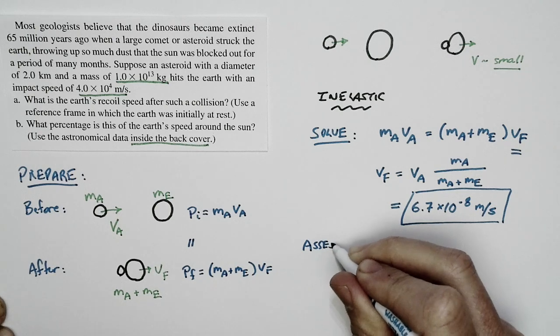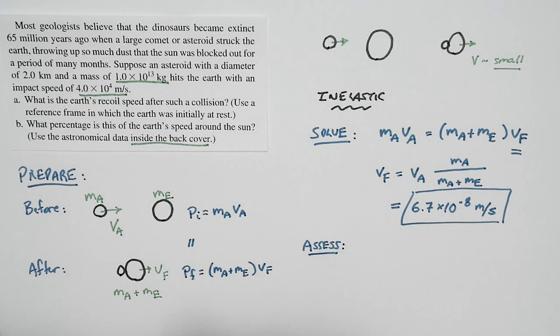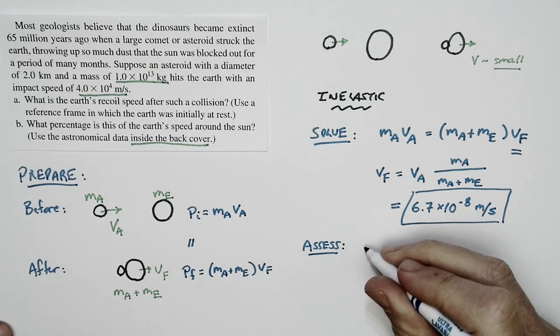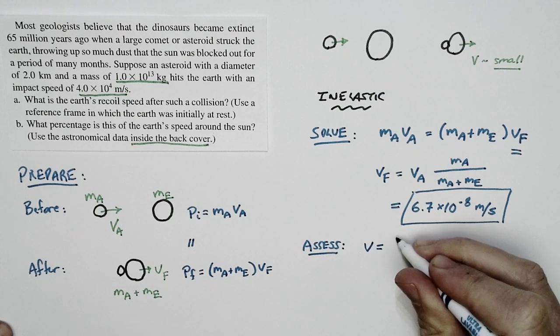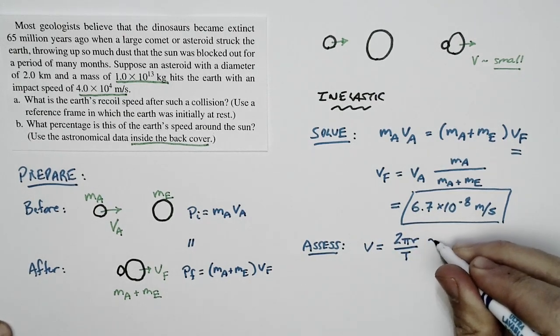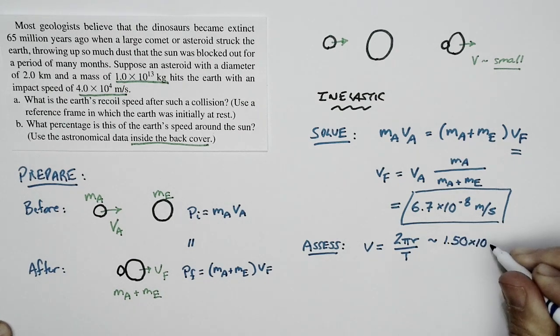But it seems even tinier if we do an assessment to compare this to the speed of the Earth around the sun. Now, the speed of the Earth around the sun is this. It's just circular motion. So it's 2πr divided by T. The radius of the Earth around the sun is 1.50 times 10 to the 11th meters. That's the radius of the Earth's orbit.